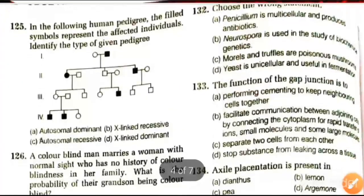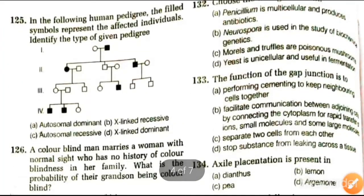Next question: in the following human pedigree, the filled symbols represent affected individuals. Define the type of given pedigree. Options are autosomal dominant, X-linked recessive, autosomal recessive, X-linked dominant. The answer is autosomal recessive.